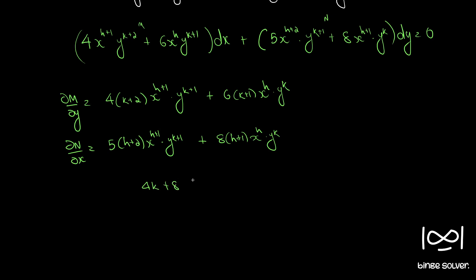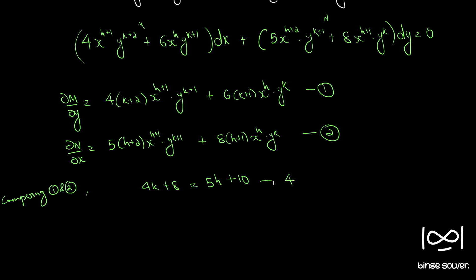Comparing coefficients gives: equation 1: 4k + 8 = 5h + 10, and equation 2: 6k + 6 = 8h + 8. Simplifying equation 1: 5h − 4k + 2 = 0.